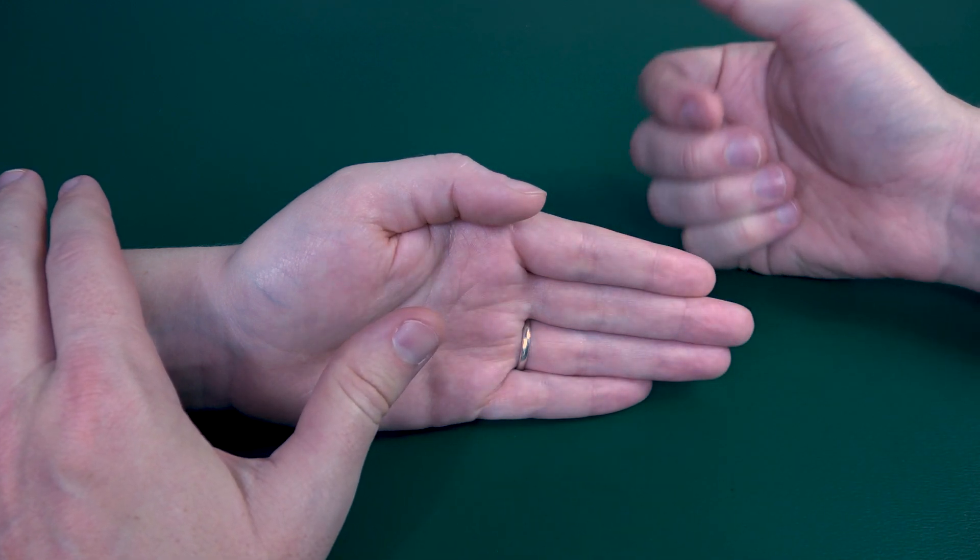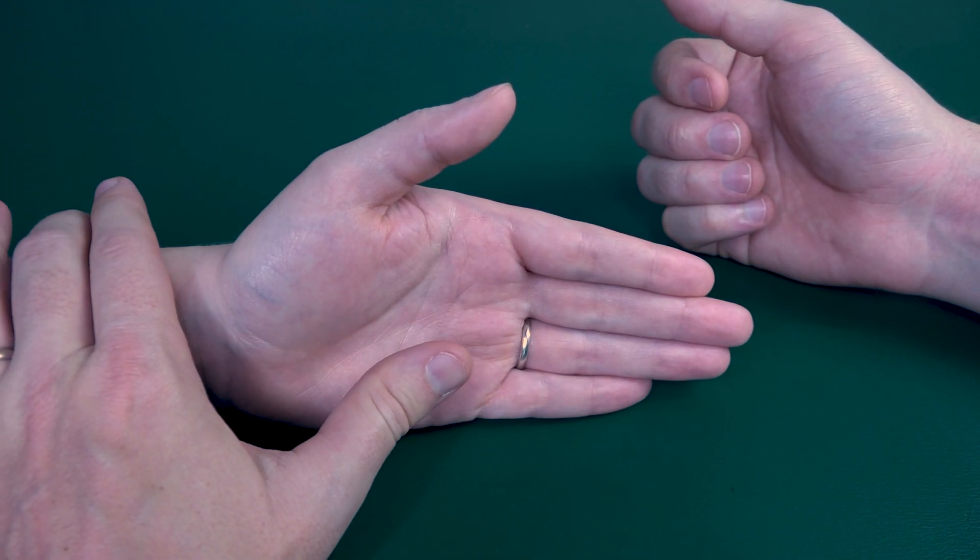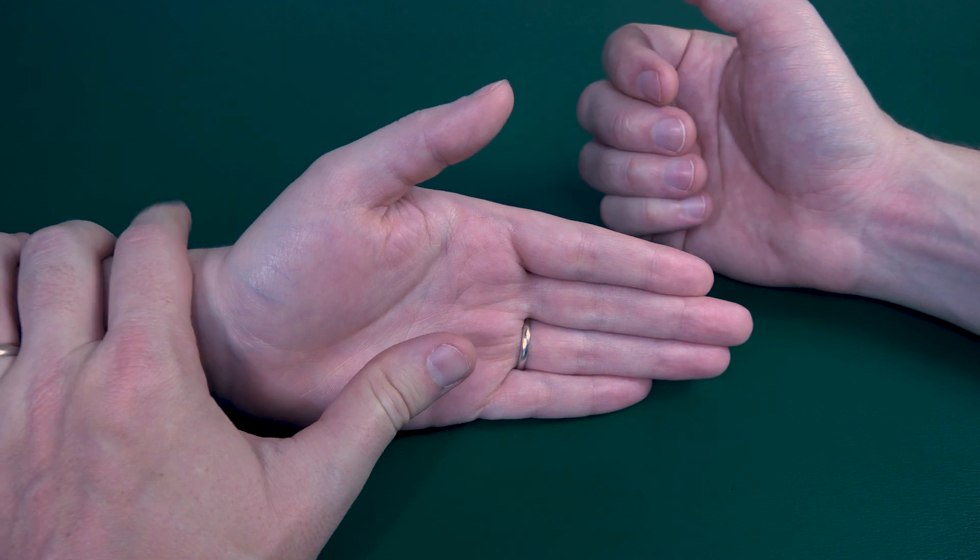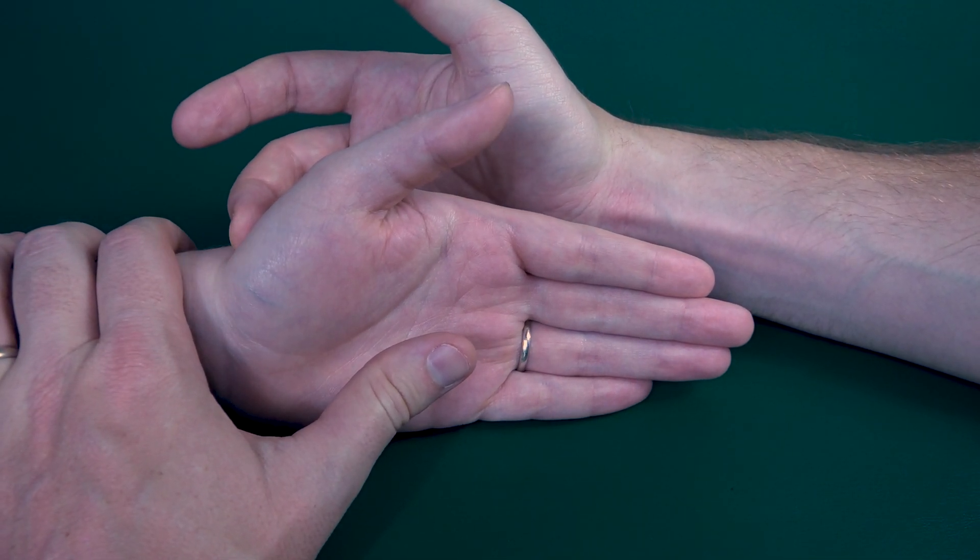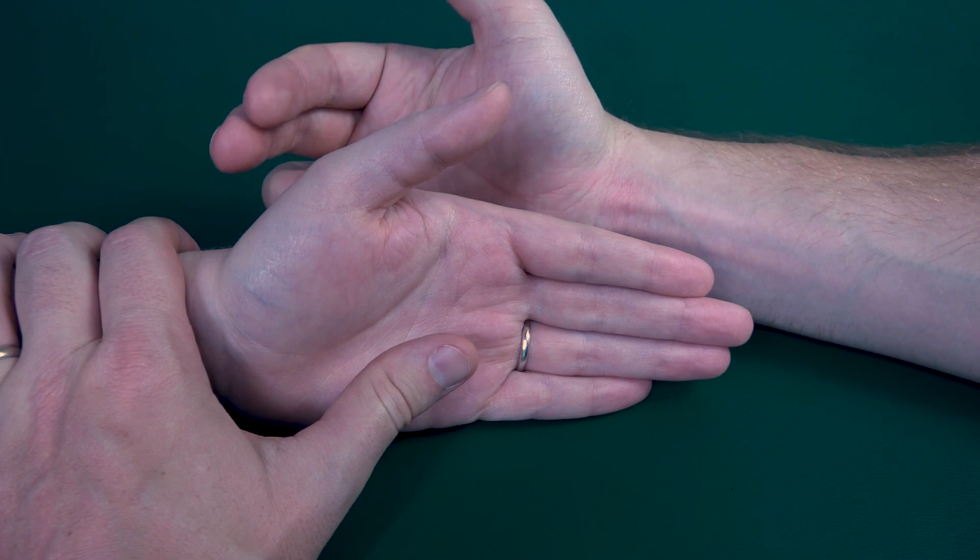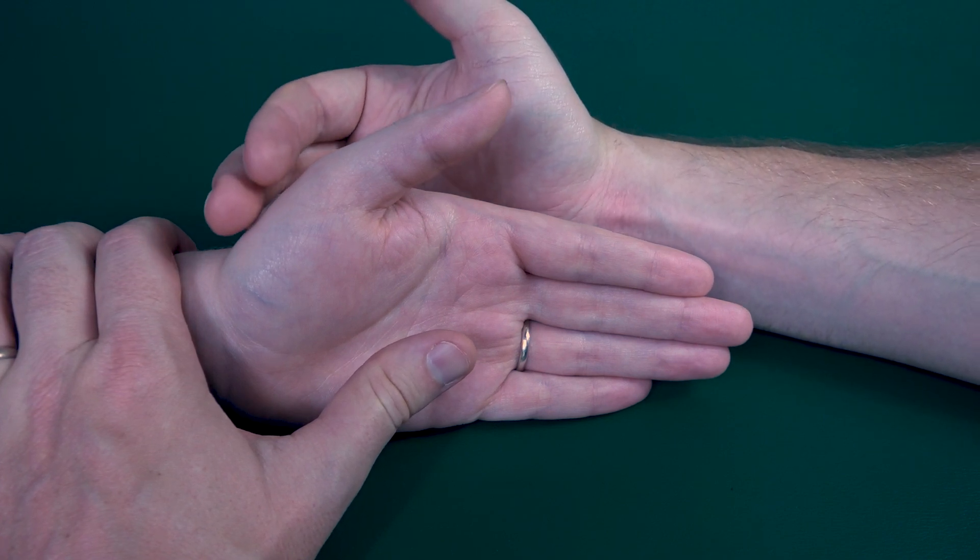Have your patient go back into extension about halfway. I will stabilize on the forearm just proximal to the CMC joint of the thumb, and then I will place resistance just distal of the CMC joint, right here.